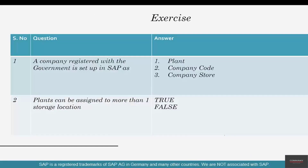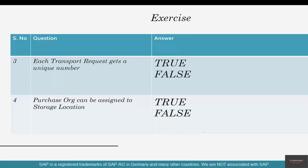Let's look at a couple of questions. First question: a company registered with the government is set up in SAP as a plant, a company code, or a company store — what's the technical word for it? Second question: plants can be assigned to more than one storage location — true or false?